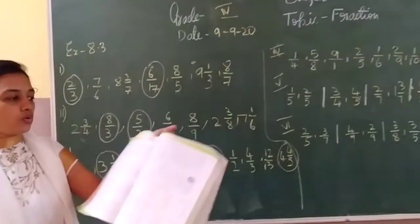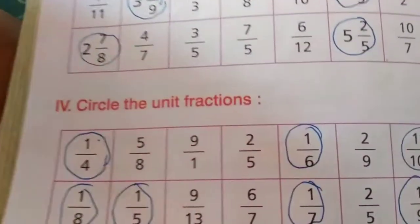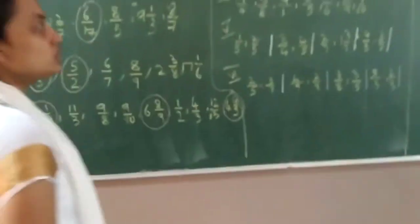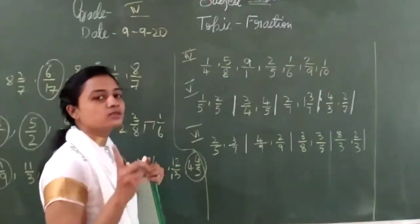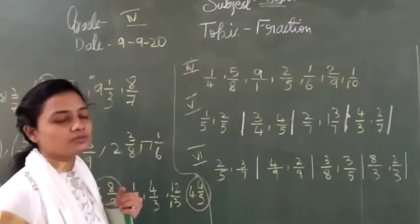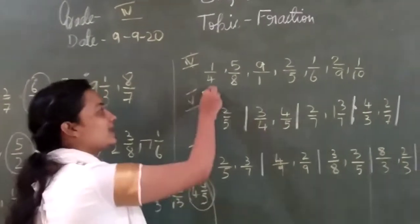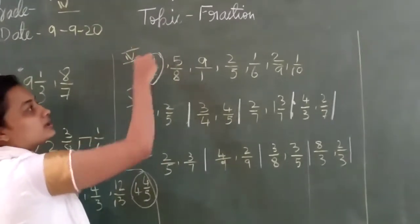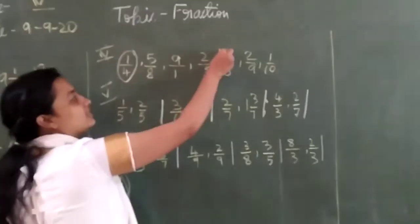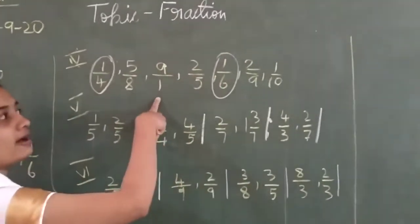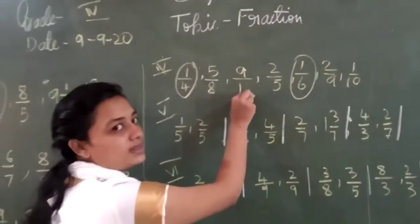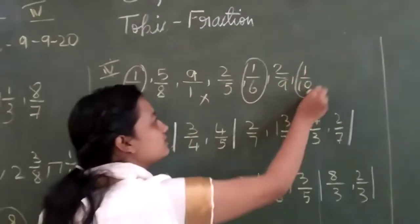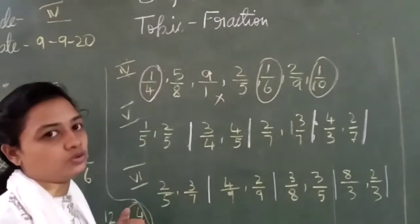Fourth question: circle the unit fractions. Unit means one, so I should have one in my numerator. Where I have one in the numerator — I can find it here, and here. But this one has one in the denominator, not the numerator, so it is not a unit fraction. And one in the numerator here — so this is a unit fraction.